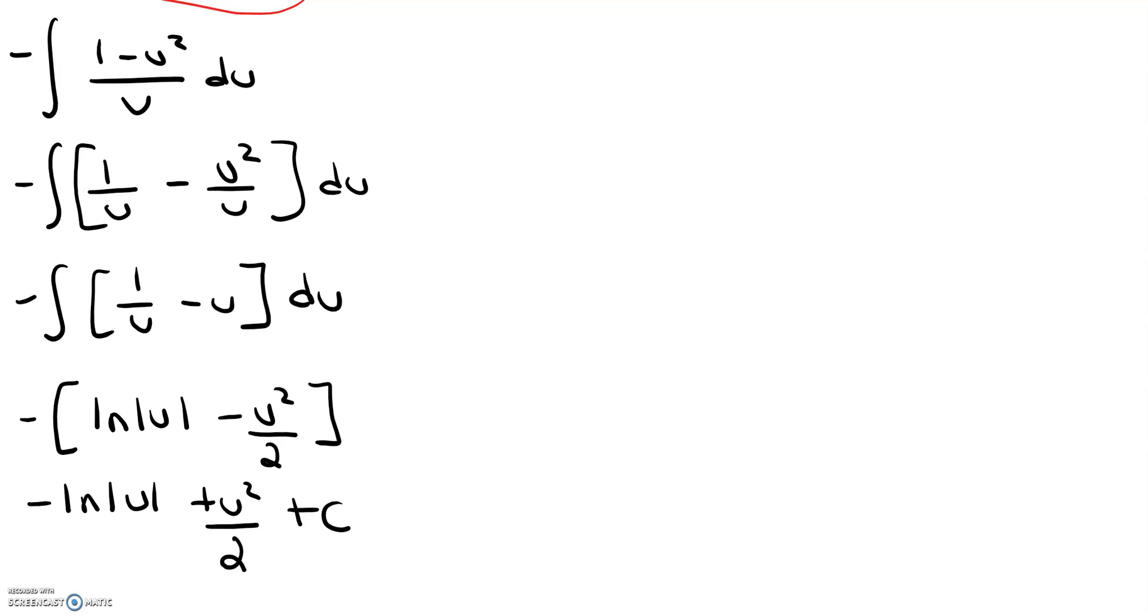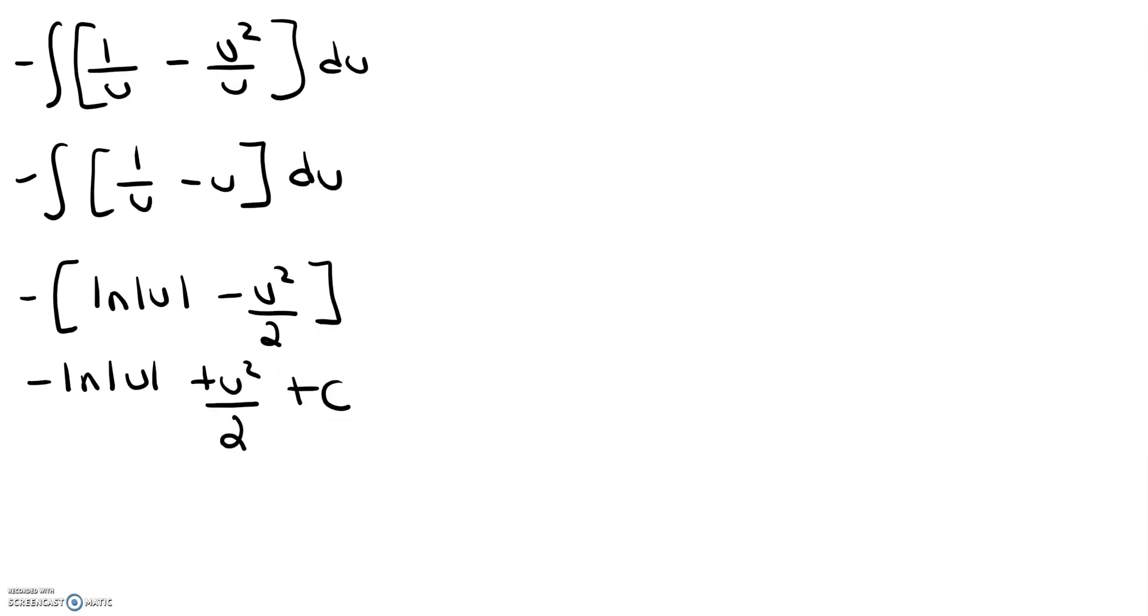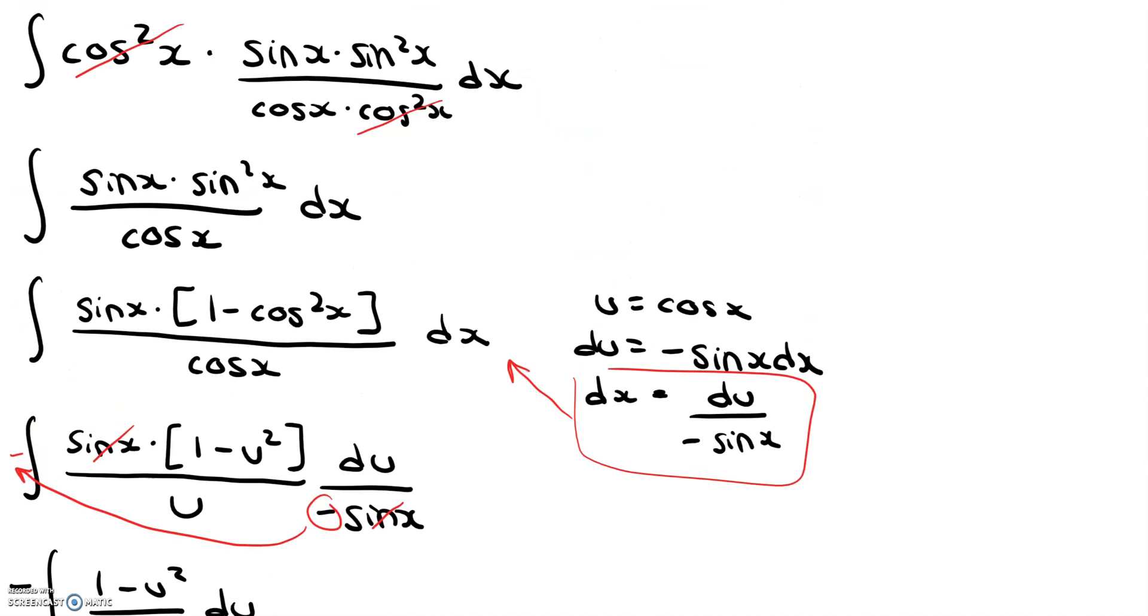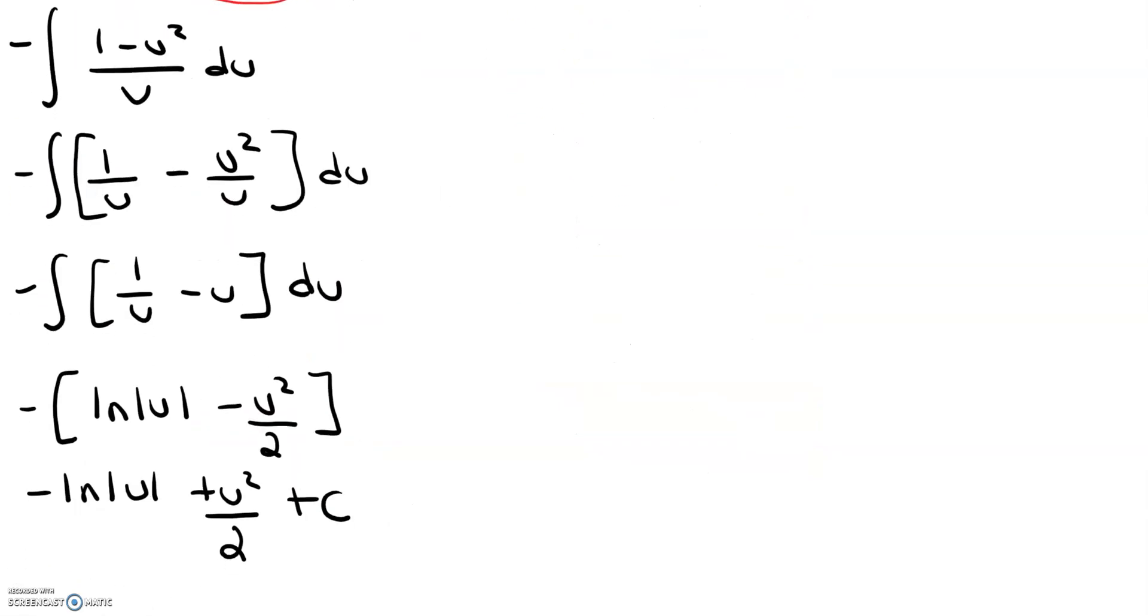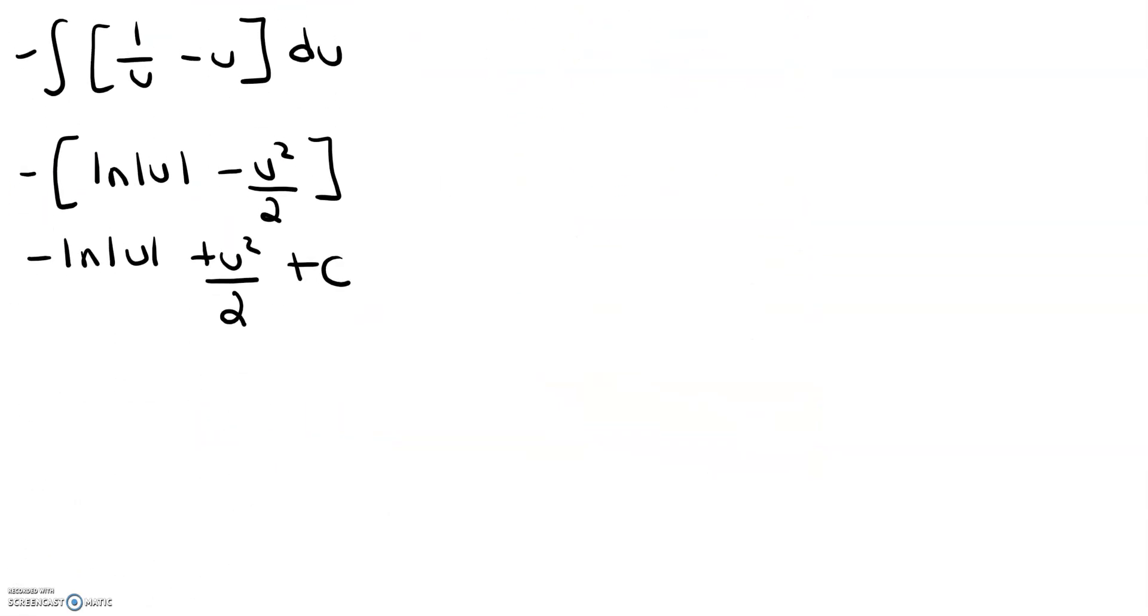And now what I want to do for my final step is I want to go and substitute back in for u. If we scroll up a bit, we can see that u is equal to cosine x. So that's what we're going to sub back in for. So we get negative ln absolute value of cosine x plus cosine squared x over 2 plus c.